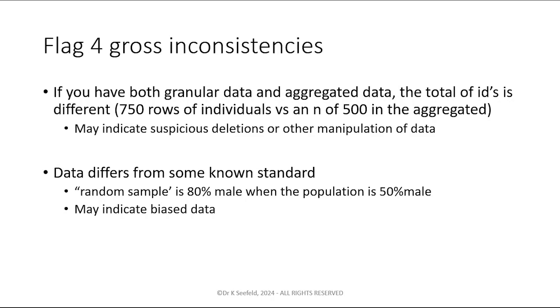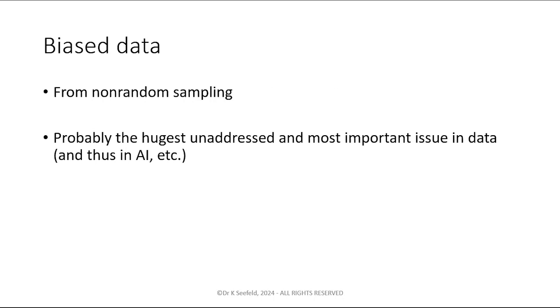Another flag for bad data is if there's gross inconsistencies. So if you have an aggregated version of the same data, you're studying a population and it says that there's a sample size of 500, and then you also have the unaggregated granular data and there's 750 people, what happened? Where are the 250 people that aren't representing the aggregated data? If you have inconsistencies from what should be the same sample in a couple different data sheets, what's going on? Data differs from some standard. For example, a random sample that's 80% male, but the population is not 80% male, it's about 50% male. You may have some type of problem with that, racially or age-wise or gender-wise or whatever other reason. Biased data is a big problem, result of non-random sampling, perhaps the biggest and hugest unaddressed issue in data analytics.